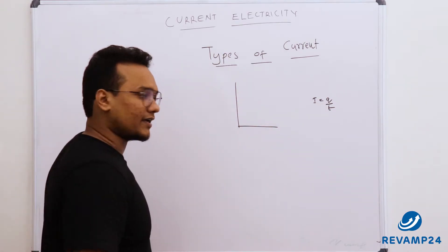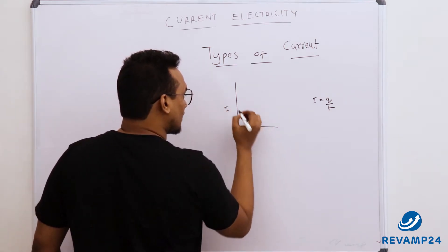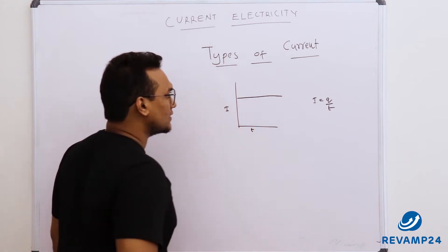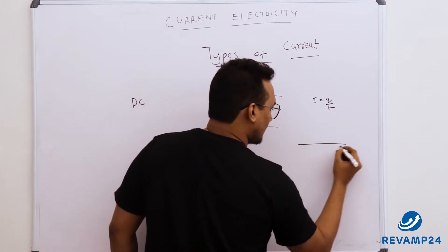So when we are plotting it on a graph, let's say this is current and this is time. With respect to time, current remains the same. That is DC current. For example, let's say we have a conductor here.